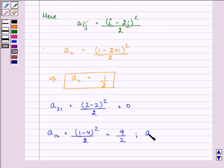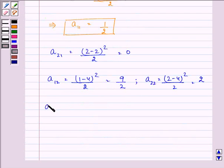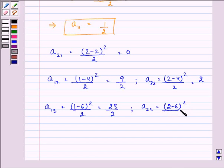And here only we will be finding out A22 also. So it is 2 minus 4 the whole square divided by 2 which gives us 2. Then we have A13 which is 1 minus 6 the whole square divided by 2 giving us the answer as 25 by 2. And A23 will be 2 minus 6 the whole square divided by 2 which is 16 by 2 which is equal to 8.